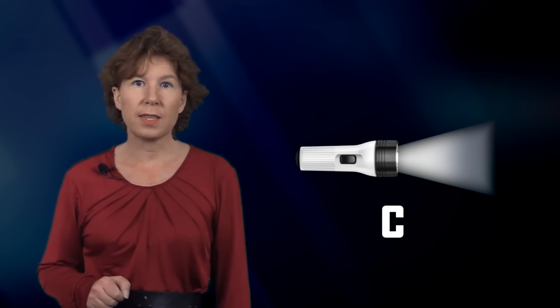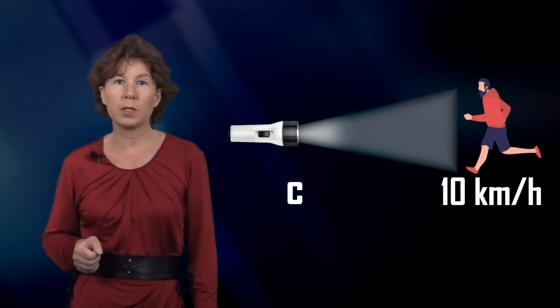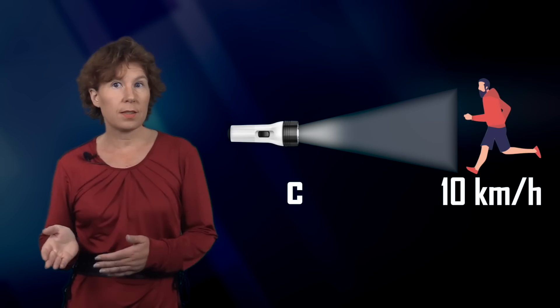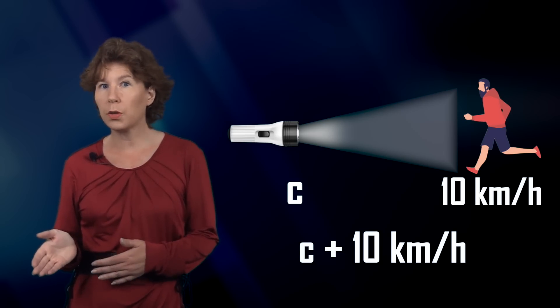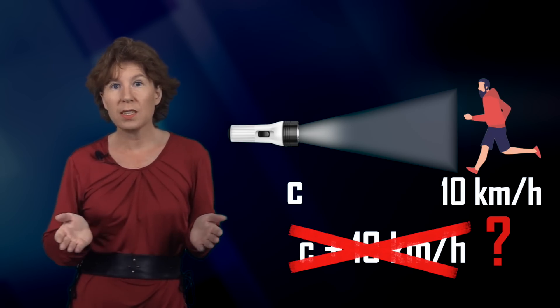Suppose I switch on a flashlight. The light moves at the speed of light, and as you know, the speed of light is the same for all observers — we learned that from Albert Einstein. Now suppose I switch on the flashlight while you come running at me at, say, ten kilometers per hour. At what velocity is the light coming at you? That's the speed of light plus ten kilometers per hour, right? No, because that'd be faster than the speed of light. What's going on is that velocities don't add like apples either. They merely approximately do this if all the velocities involved are much smaller than the speed of light.